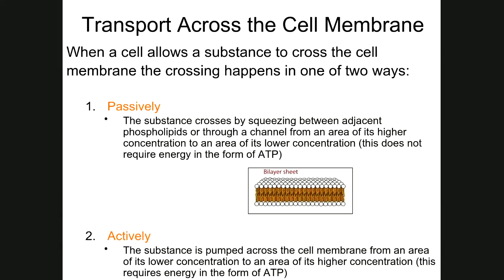Previously, we talked about the structure of cell membranes and the fact that the structure makes the cell selectively permeable. It has some control over what is able to cross the cell membrane or plasma membrane, either from outside to inside or from inside to outside. Now I want to talk about how those things that are allowed to cross the cell membrane actually go about doing so.